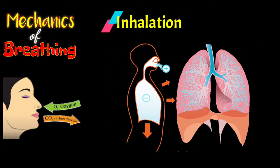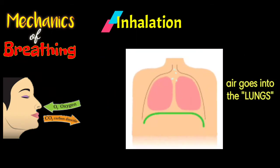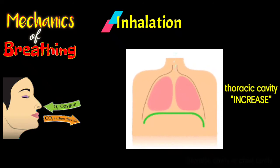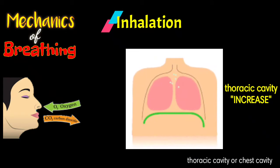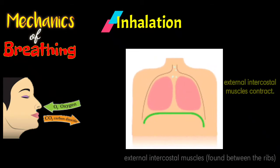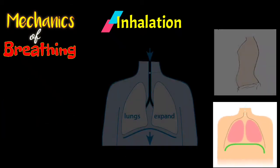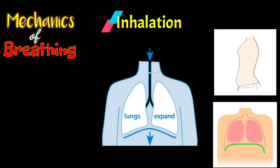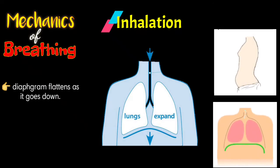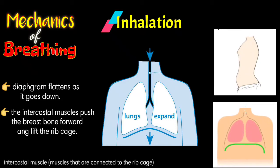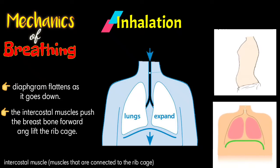Inhalation is the mechanical process wherein air goes into the lungs. The size of the thoracic cavity increases when the inspiratory muscles, such as the diaphragm and the external intercostal muscles found between the ribs, contract. As shown in our illustration, the diaphragm flattens as it goes down during inspiration, while the intercostal muscles push the breastbone forward and lift the ribcage. This causes the dimensions of the thorax to increase.